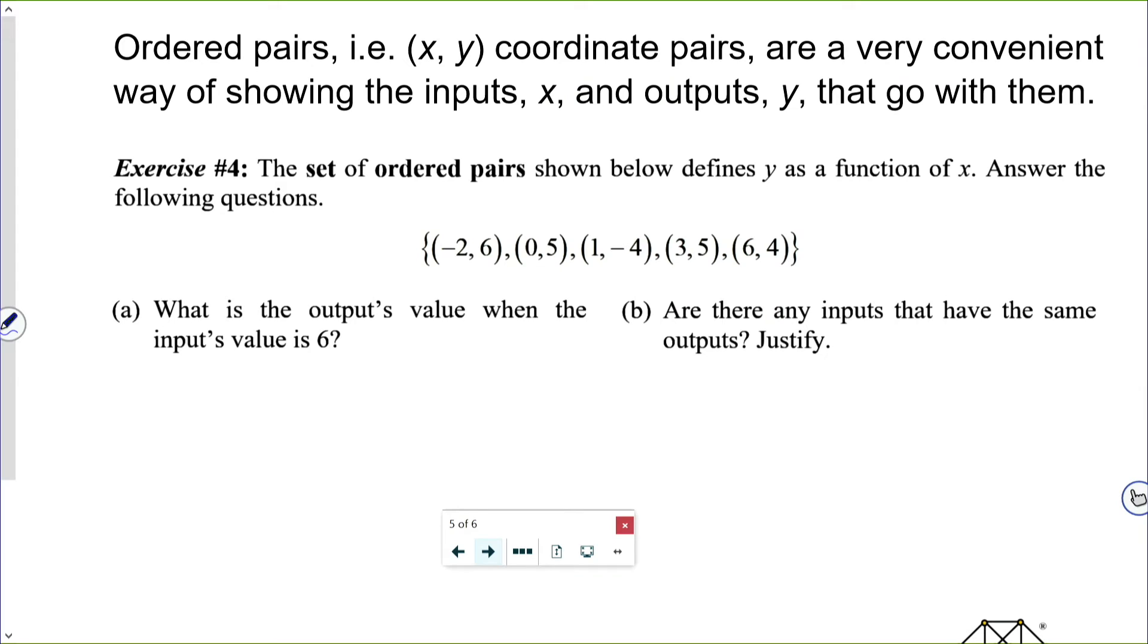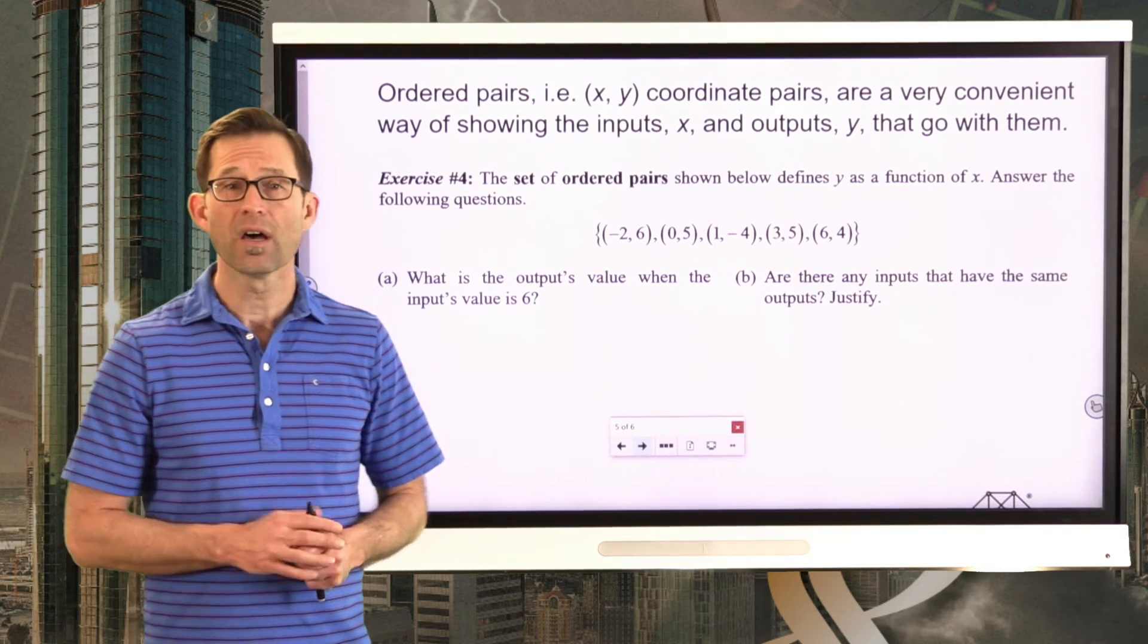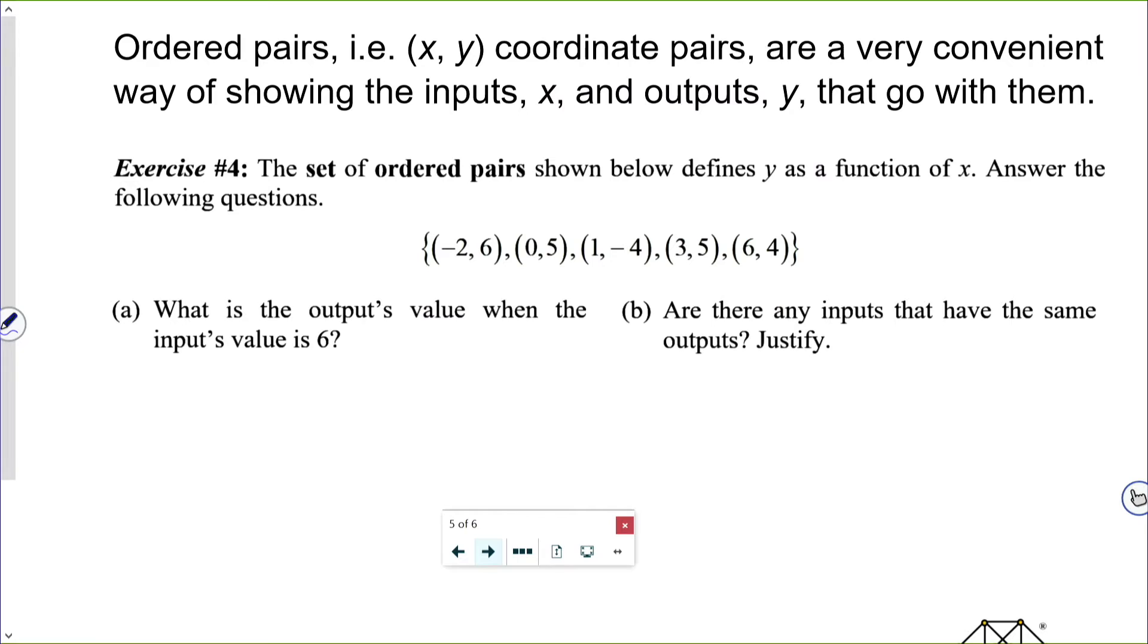So ordered pairs, i.e., x comma y coordinate pairs, are a very convenient way of showing the inputs, the x values, along with their outputs, the y values that go with them. Let's take a look at that in exercise number four. The set of ordered pairs shown below defines y as a function of x. Answer the following questions. Letter a, what is the output's value when the input's value is 6?